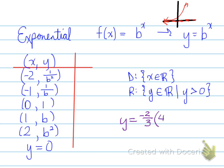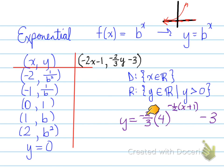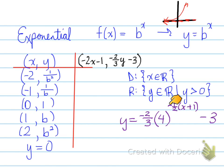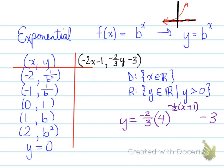Here's an example of an exponential function equation. It is negative 2 thirds times 4 to the power of negative 1 half x plus 1, and then minus 3 at the end. The negative 1 half means it'll become negative 2, so we're going to have negative 2 times x — that gives a horizontal reflection, a horizontal stretch by a factor of 2, and a horizontal translation of left 1. For the y values, we multiply by negative 2 thirds times y and then subtract 3. We can apply all of these transformations to get our new graph.